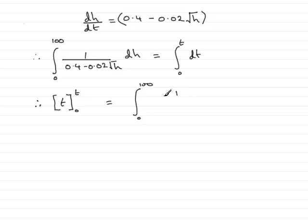And then if I just copy that back in, 0.4 minus 0.02 root h, integrated with respect to h. If I substitute in for t, this value of t, that's going to be t. And then subtract this limit, 0. So what I get here is just simply t.